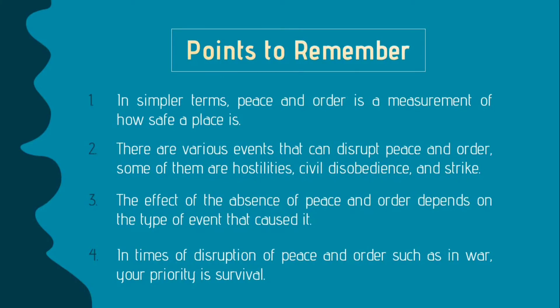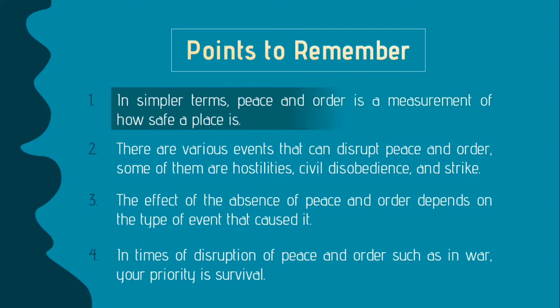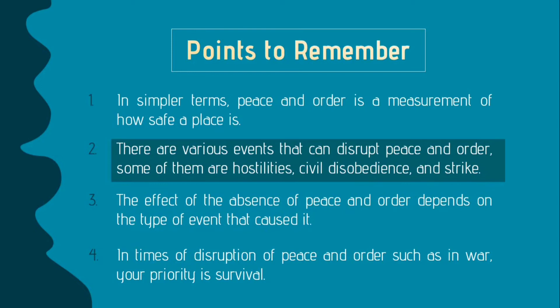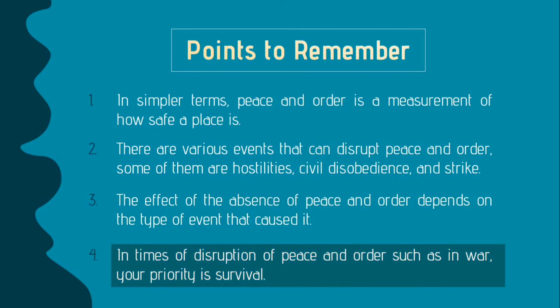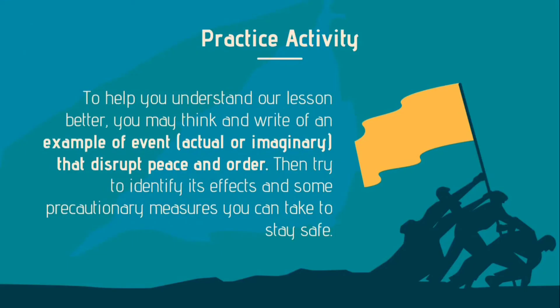To sum up our lesson, here are our four points to remember. 1. In simpler terms, peace and order is a measurement of how safe a place is. 2. There are various events that can disrupt peace and order; some of them are hostilities, civil disobedience, and strife. 3. The effect of absence of peace and order depends on the type of event that caused it. 4. In times of disruption of peace and order, such as in war, your priority is your survival. Do this practice activity to help you understand our lesson better. You may think and write of an example of an event, actual or imaginary, that disrupts peace and order. Then, try to identify its effects and some precautionary measures you can take to stay safe.